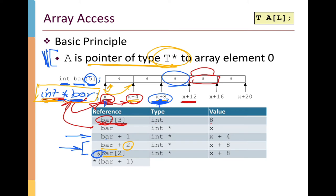We can also use the dereference operator. bar plus 1 is itself a pointer to an integer with value x plus 4. When we dereference that — applying the star to it — we're asking what is the thing pointed to by this address. bar plus 1 is an int star, so dereferencing it gives us the int stored at that location. Its type is int and its value is 6, corresponding to the element at bar plus 1, or index 1.